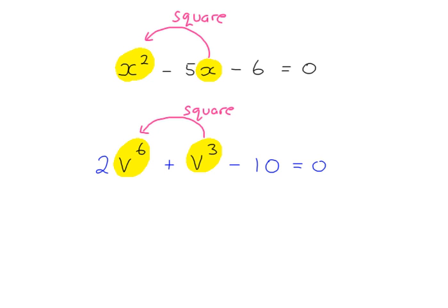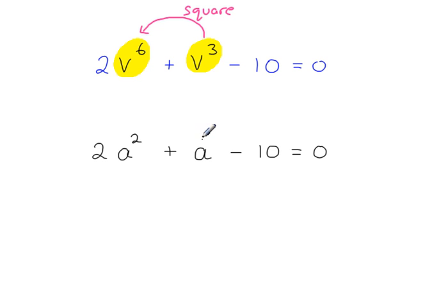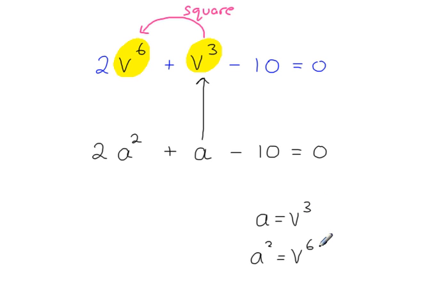A disguised quadratic can be rewritten. Focusing on this example, I could rewrite this as 2a squared plus a minus 10 equals 0. You can see the similarities between these equations. What I've done here is used the substitution a equals v cubed. Squaring both sides gives a squared equals v to the power of 6, because squaring v cubed means multiplying it by itself — adding the indices gives 6. And v to the power of 6 corresponds to a squared.